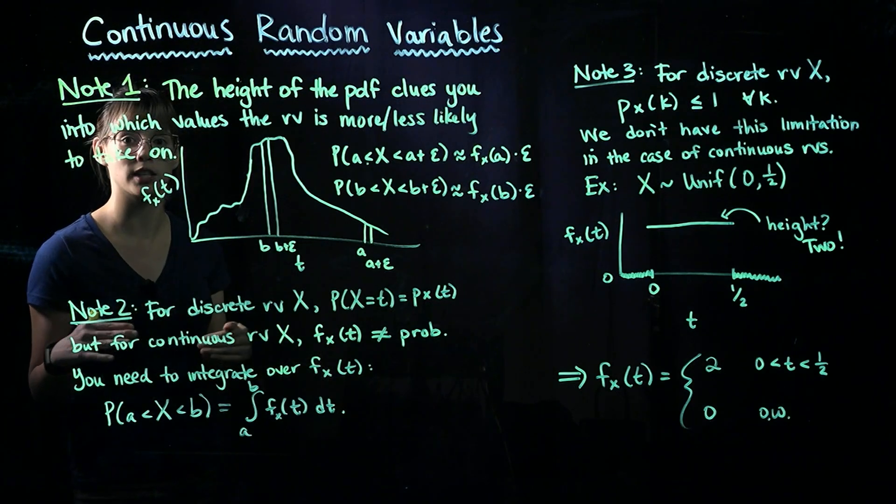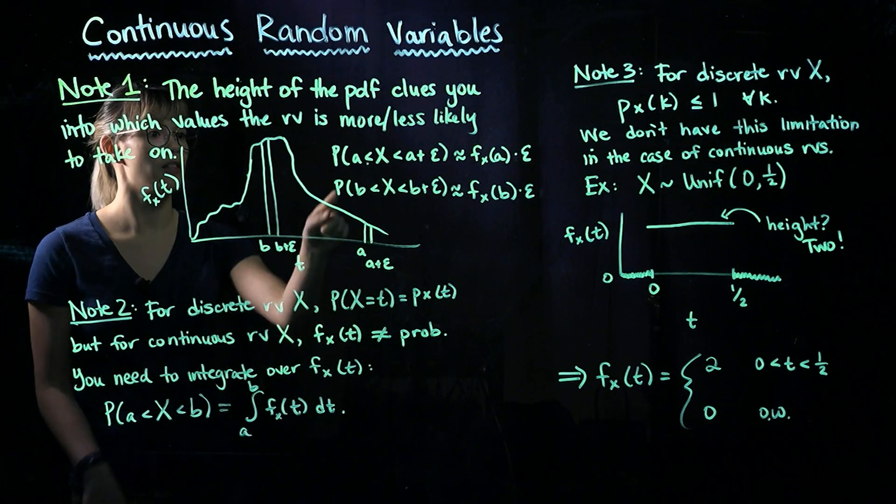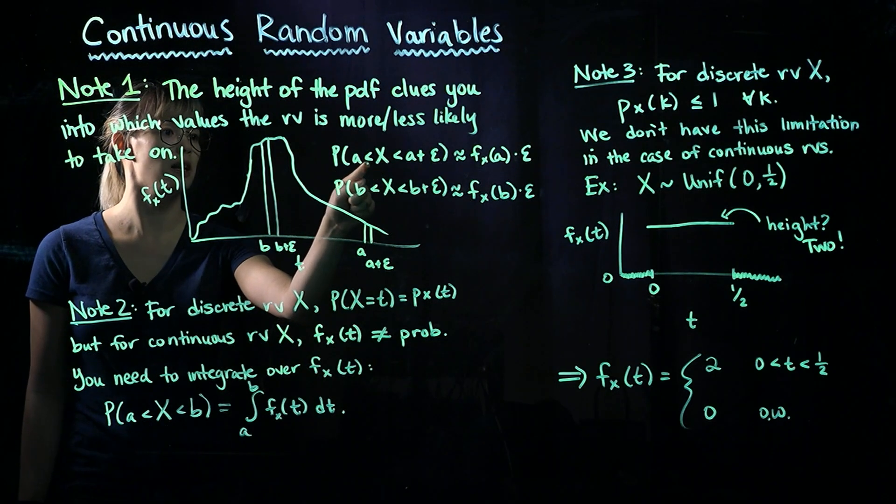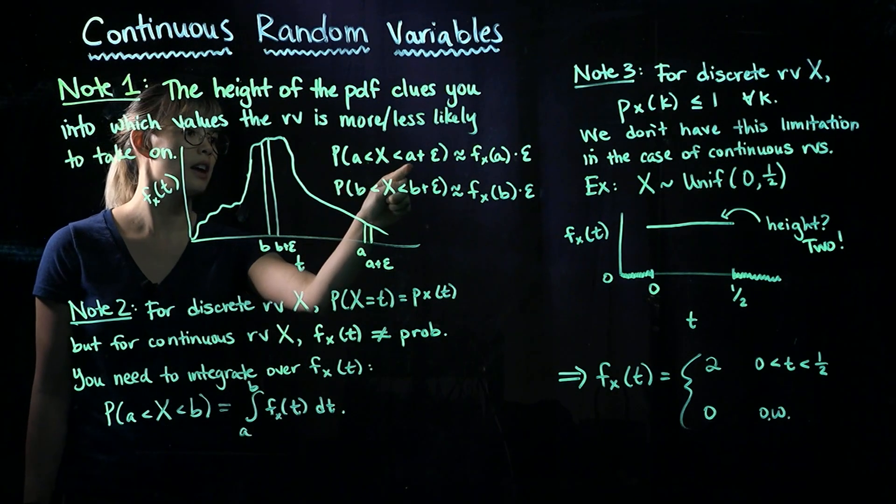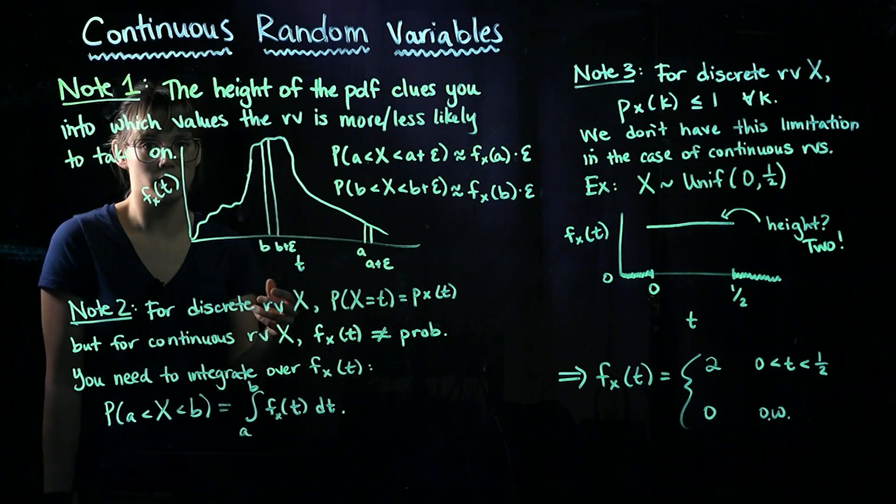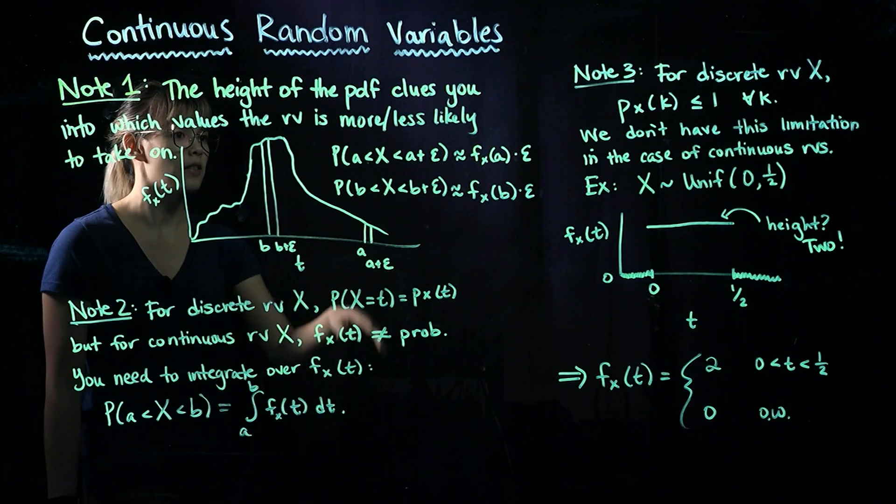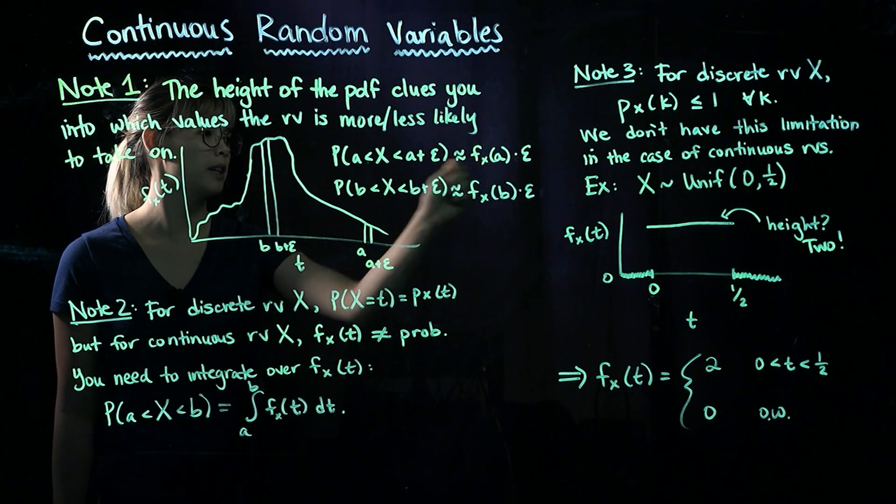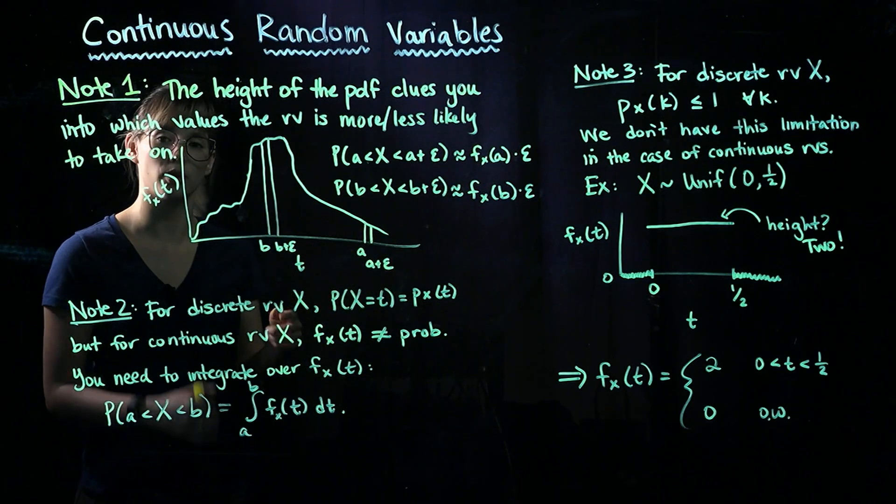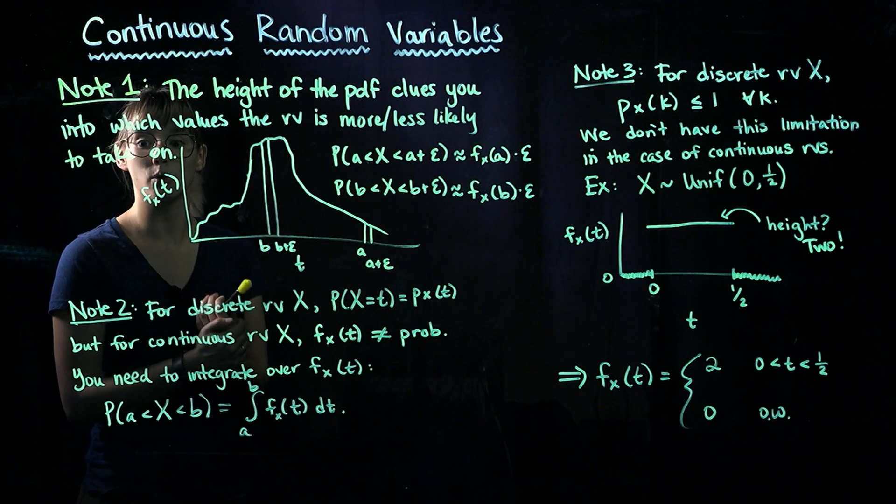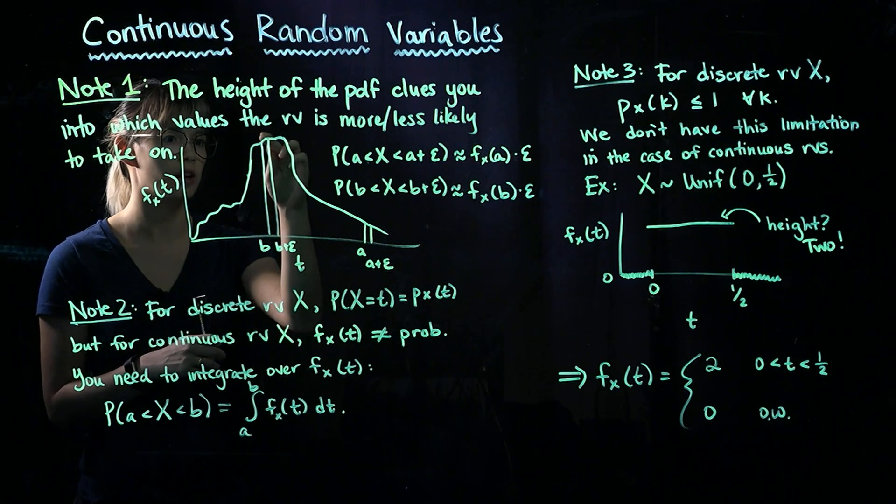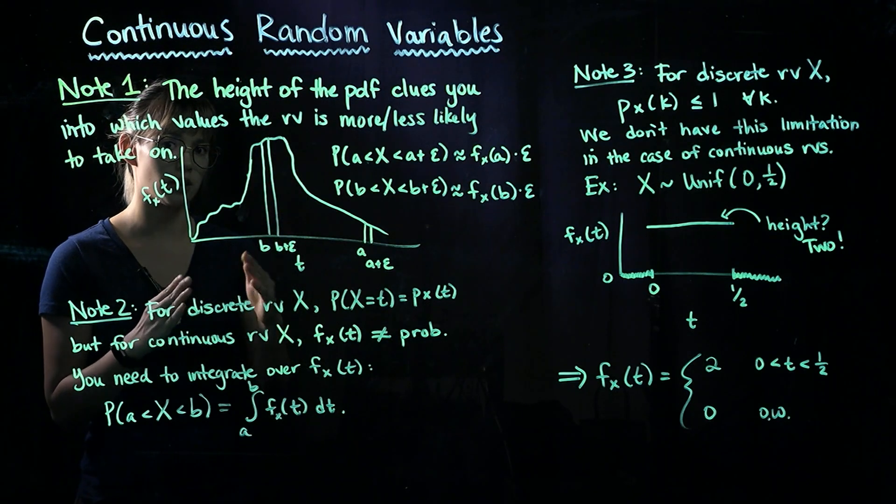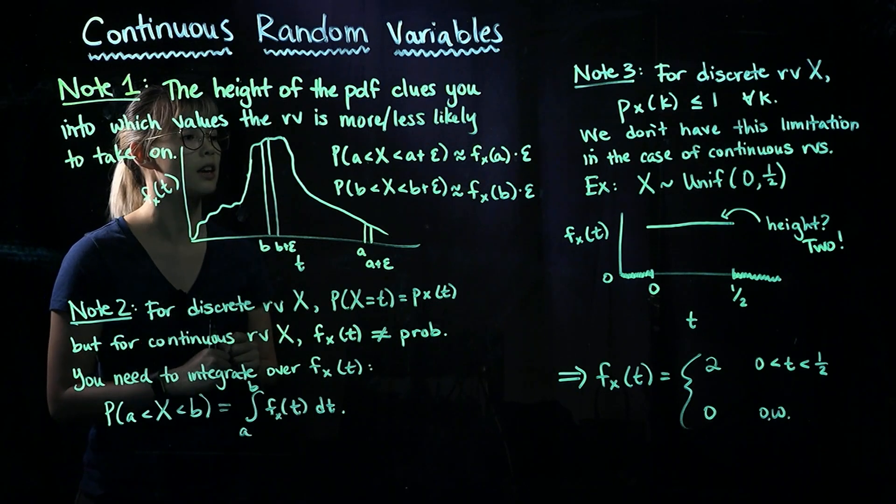So if we remember back to how to calculate probabilities, then the probability that X is between A and A plus epsilon, where epsilon is some small positive number, that's going to be approximately the PDF evaluated at A times epsilon. So if we just think about Calc 1, we know that we can approximate the area under a curve with just a rectangle.